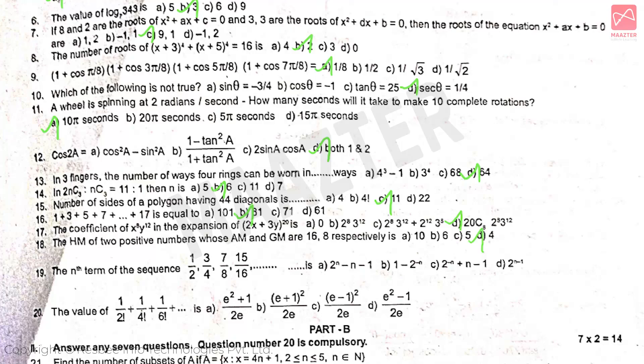The nth term of the sequence 1/2, 3/4, 7/8, 15/16, ... is answer option B. The value of 1/2! + 1/4! + 1/6! + ... is answer option C.